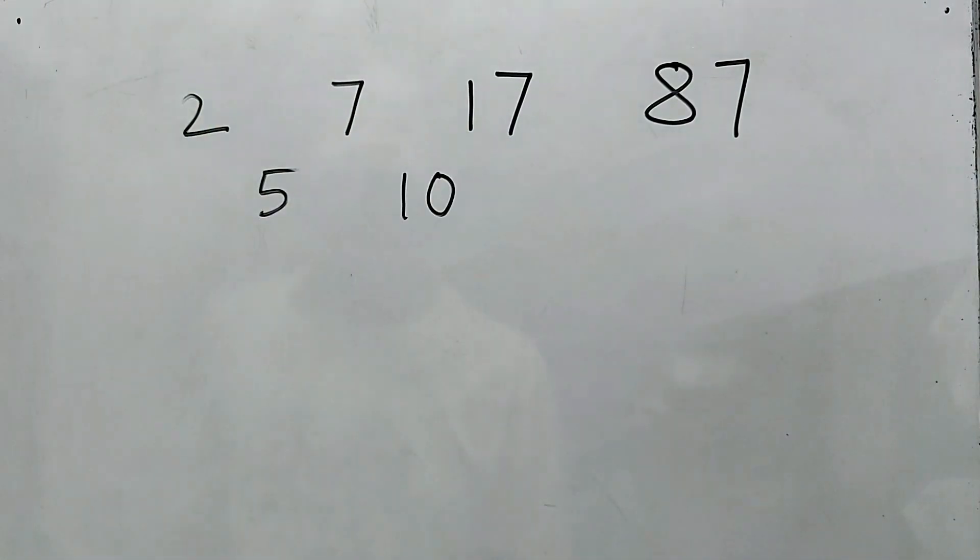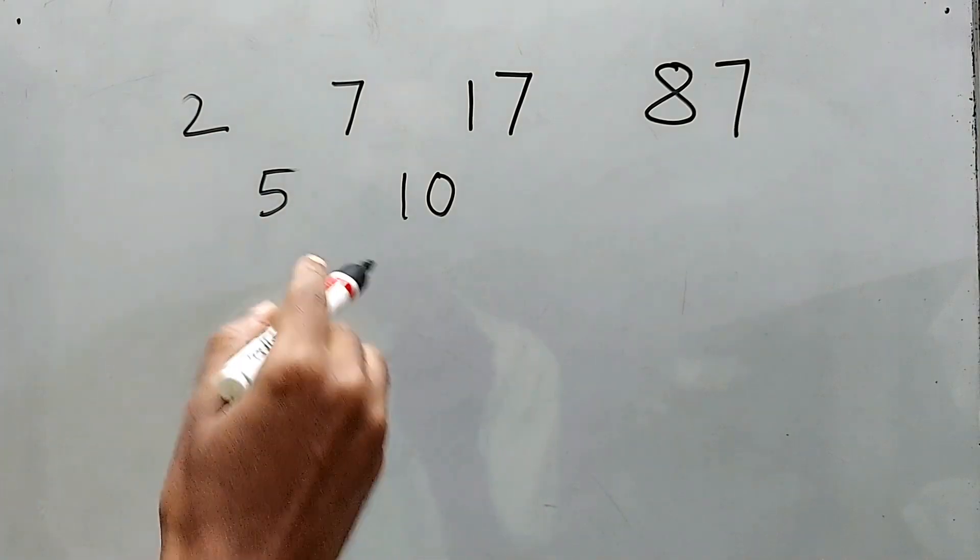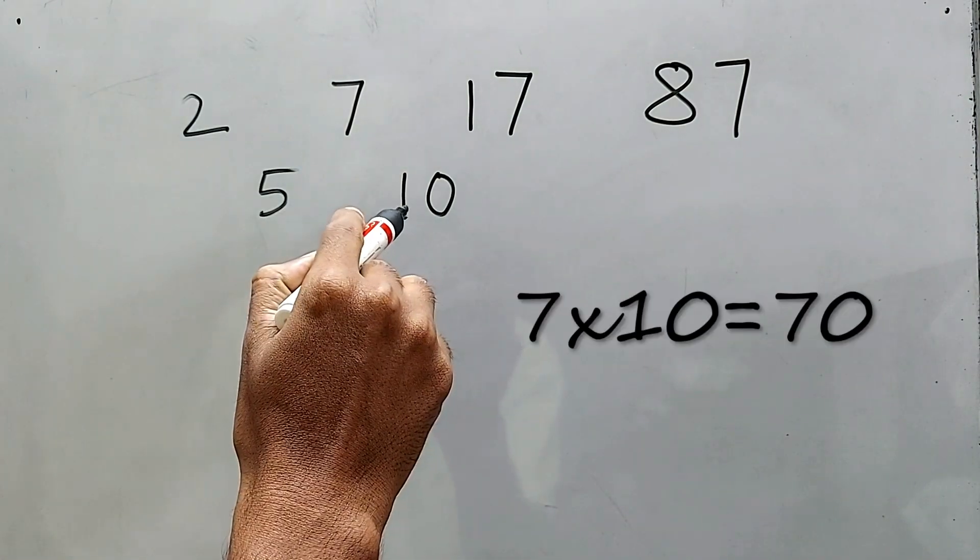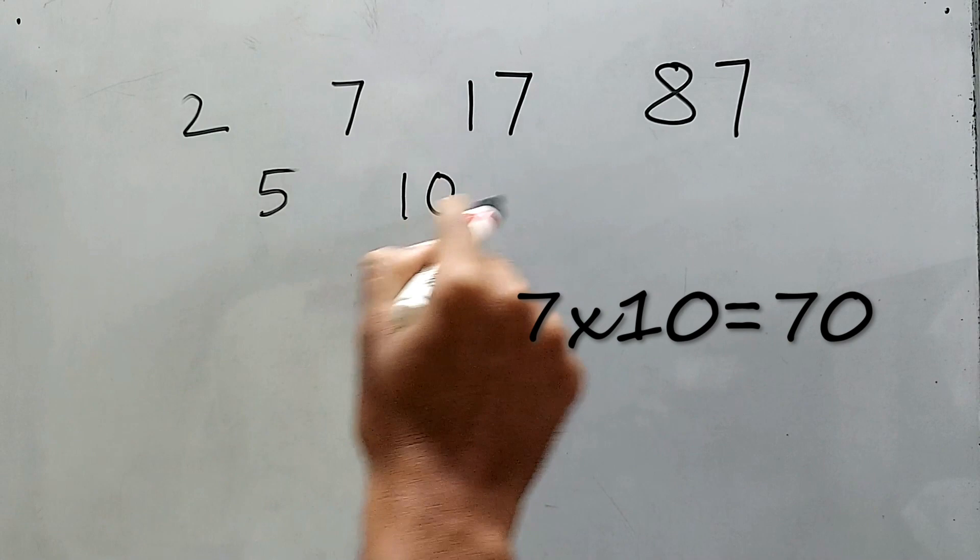Getting my point? Next one, try this one: 7 times 10 is 70, 70 plus 17 is 87. Getting my point?